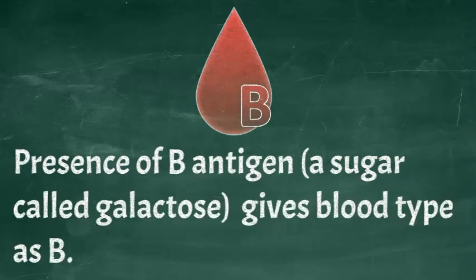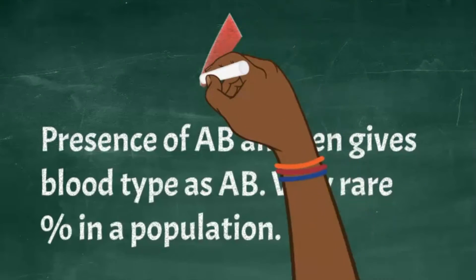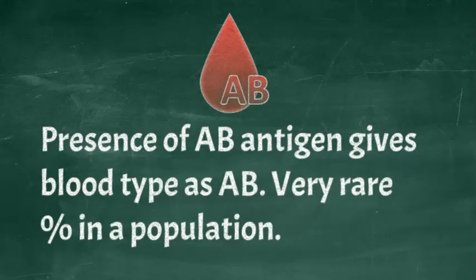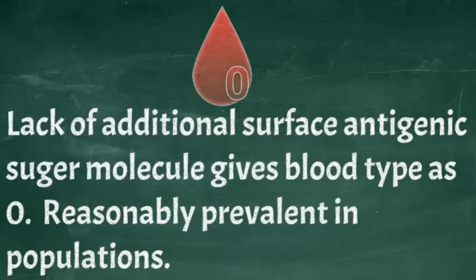For example, in the ABO system, presence of a B antigen gives the blood type as type B. The presence of an A antigen on the surface of the red blood cell classifies that blood type as type A. And the presence of both antigens — there are some individuals where both antigens are present on their red blood cells — these ones are classified as type AB. There are also individuals where there are no antigens on the surfaces of the blood cells, and these are type O.